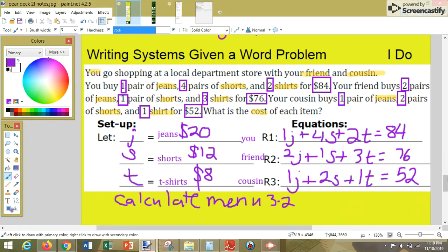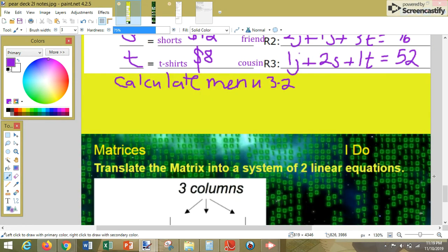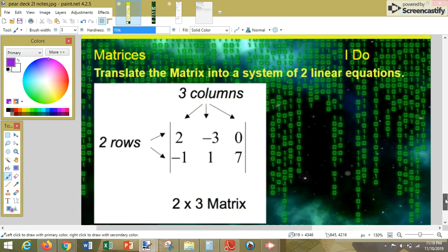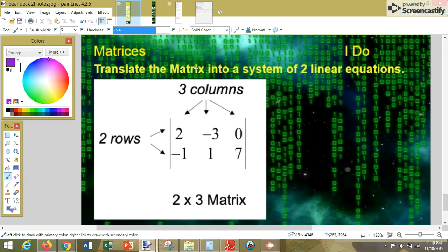Let's talk about the last example for these notes today. Matrices. Translate the matrix into a system of two linear equations. So, we have two rows here, two equations. And we have three columns. We have the x column, the y column, and the constant column.